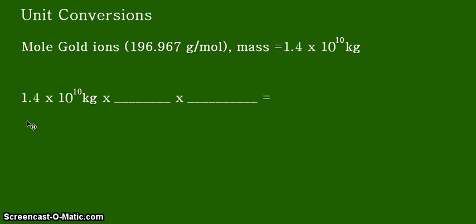And this is the outline of our solution. We start with the given mass of the gold ions in the ocean, which is 1.4 times 10 to the 10 kilograms. And we have two blanks, meaning we need two equivalent statements for us to solve this problem. And those equivalent statements should be the conversion factor form in the solution.